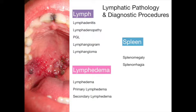A lymphangiogram is a radiographic study of the lymphatic vessels and nodes with the use of a contrast medium to make these structures visible. A lymphangioma is a benign abnormal collection of lymphatic vessels forming a mass. Lymphedema is an abnormal accumulation of lymphatic fluid that causes swelling, usually in the arms or legs. Primary lymphedema, a hereditary disorder, may occur at any time in life. Secondary lymphedema is caused by identifiable factors, such as surgical removal or radiation of the lymph nodes in the treatment of cancer. Splenomegaly is an enlargement of the spleen.